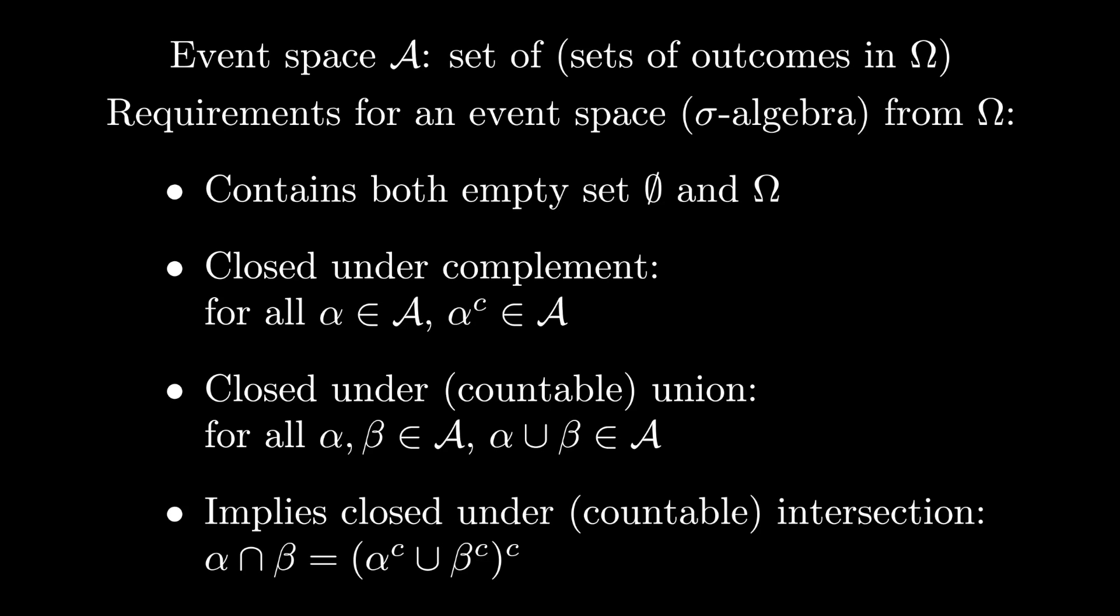Beyond that, if we include any other subset of omega in A, then we also have to include its complement. The event space A must also be closed under union. That is, if I take any two sets that are already in A, then their union also needs to appear in A. Being closed under complement and closed under union implies that it's also closed under intersection.